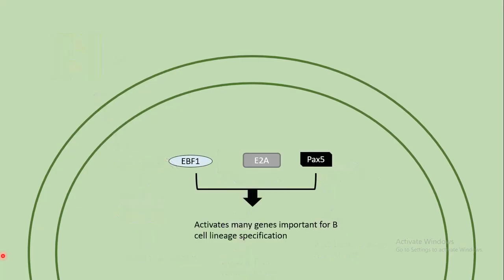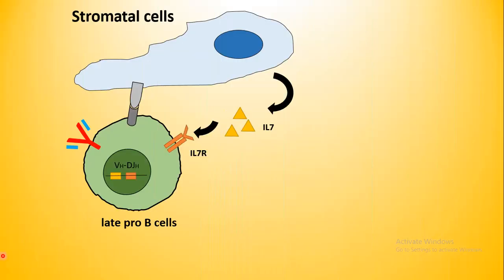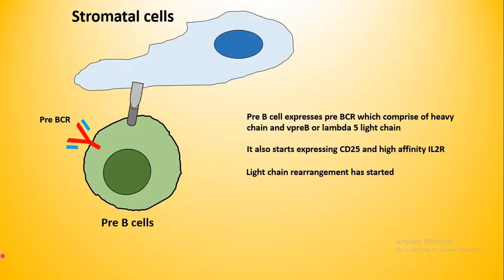EBF1, E2A, and PAX5 — all these transcription factors activate many genes which are important for B-cell lineage specification and B-cell proliferation. Once the early pro-B cell stage is over, then comes the late pro-B cell stage. In the late pro-B cell stage, it starts expressing a primitive version of the B-cell receptor. The heavy chain of the B-cell receptor is formed, but the light chain is not yet properly formed. At this point, the light chain is known as the surrogate light chain, which comprises V-pre-B or Lambda-5. From this stage onwards, light chain recombination also starts.